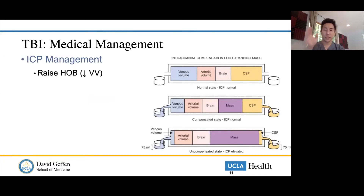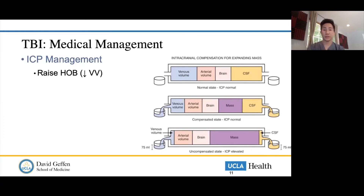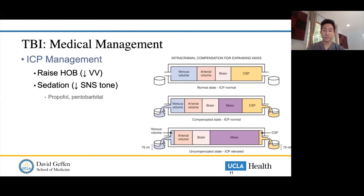For medical management as a sub-I or intern: first and foremost, raise the head of the bed. This is often overlooked — patients in the trauma unit get intubated and people forget. Raising the head of bed drops intracranial pressure about 10 to 15 centimeters of water, and can be the difference between bad neurologic outcomes and not. If they're on spine precautions, use reverse Trendelenburg. Also consider sedation, which decreases sympathetic tone and metabolic demand, helping reduce intracranial pressure.